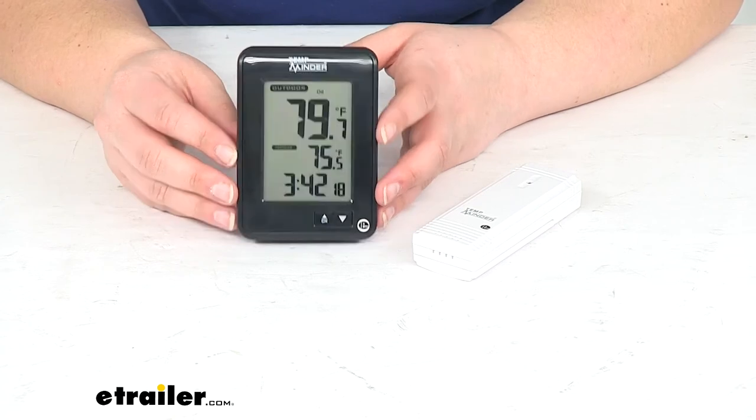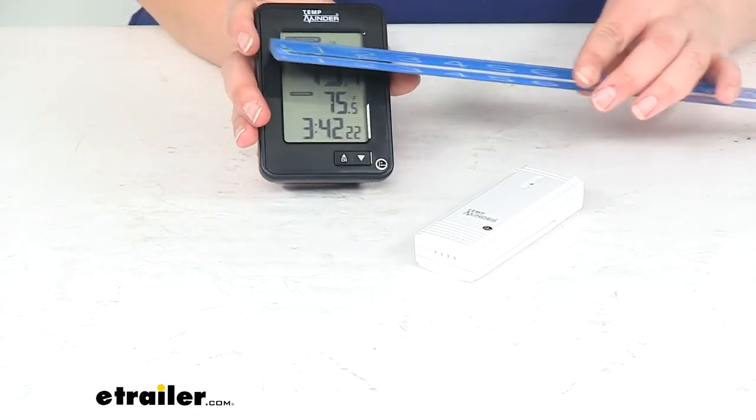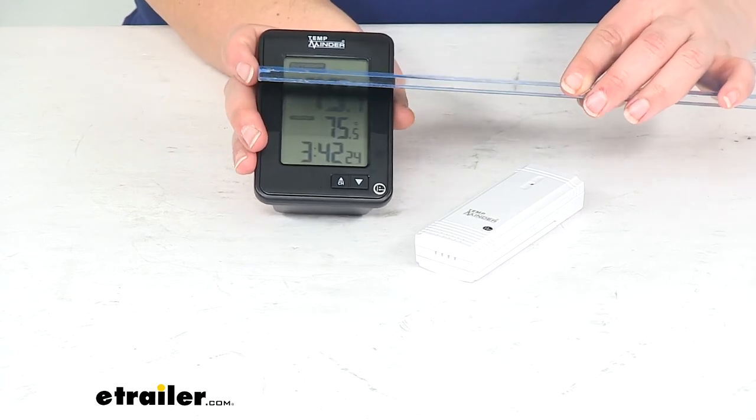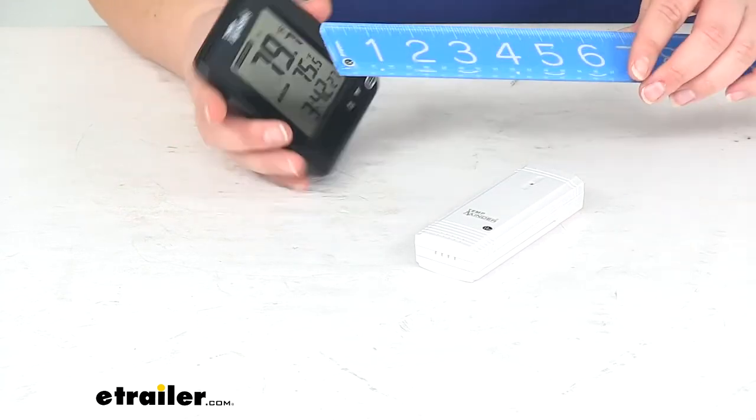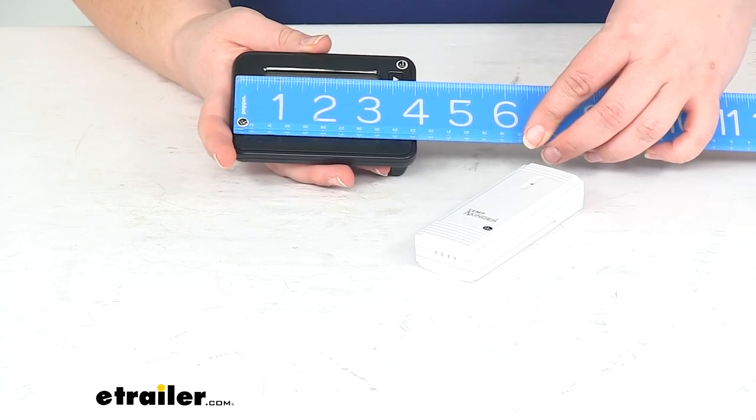That's pretty much all there is to it for our TempMinder. I'm going to give you a couple measurements for size reference. It's about three inches wide by about four inches tall.